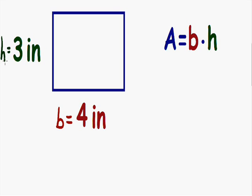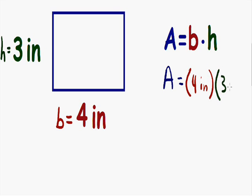Now that we have our base and our height, we can plug everything into our area formula. The area is equal to the base — and we know that the base of our rectangle is 4 inches, so I'm going to plug in 4 inches for the base — multiplied by our height, which is equal to 3 inches, so I'm going to plug in 3 inches for the height.